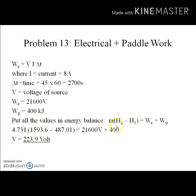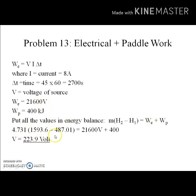Putting all values into the energy balance — m, h2, h1 from the steam tables, W_paddle = 400 kJ, and W_electric = 21600·V — gives a single equation in one unknown, V. Solving this energy balance equation, the voltage of the source comes out to be 223.9 volts.